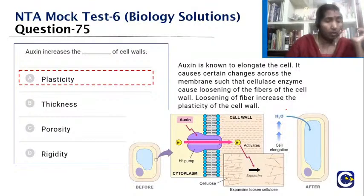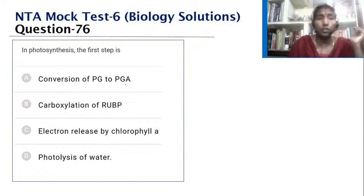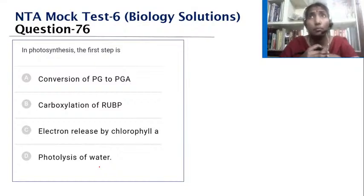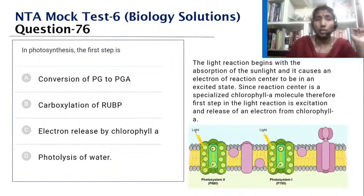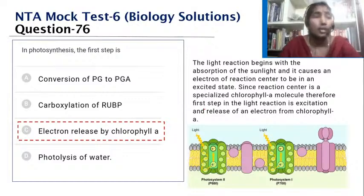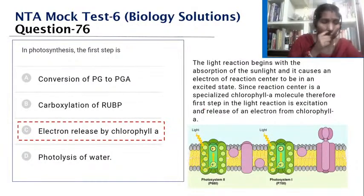In photosynthesis, the first step is the electron released by chlorophyll A. Light energy is absorbed and trapped by the photosystem; the reaction center (specialized chlorophyll molecule A) gets excited and releases electrons. This is the very first step, followed by formation of assimilatory products and the Calvin cycle. The answer is electron released by chlorophyll A.